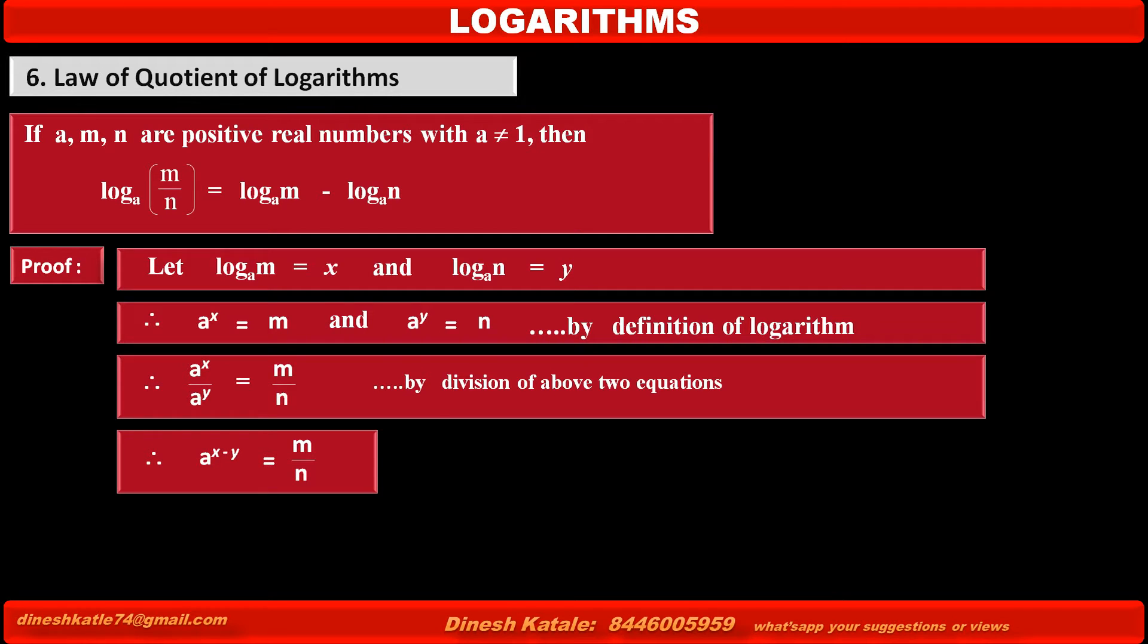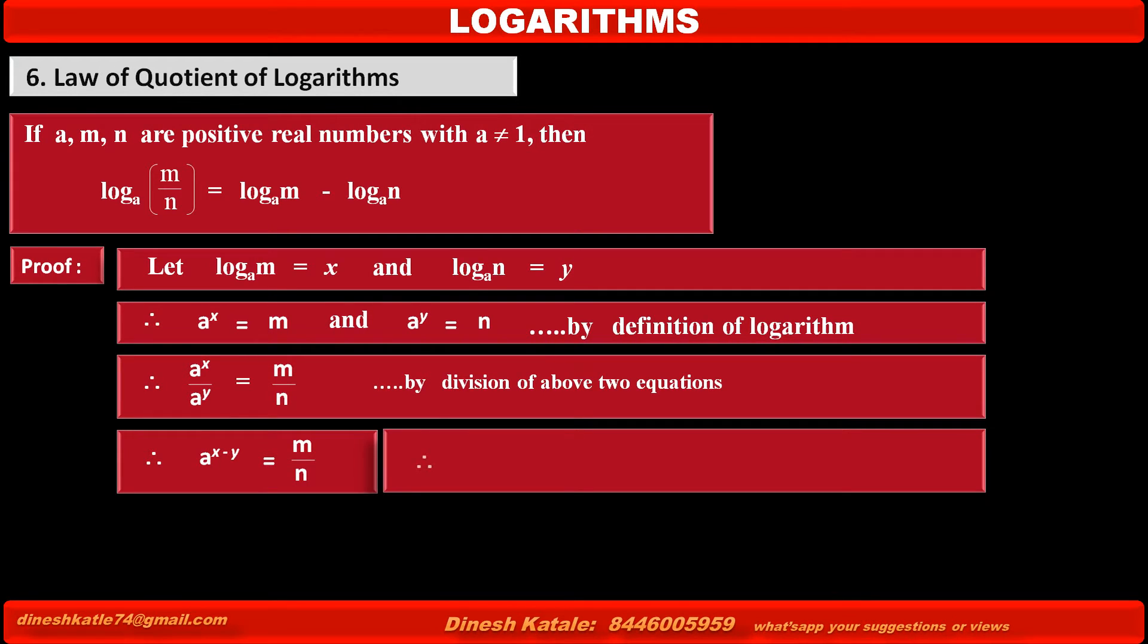Therefore, by converting the above exponential form to logarithmic form, we get log to the base a of m upon n is equal to x minus y, according to the definition of logarithm.